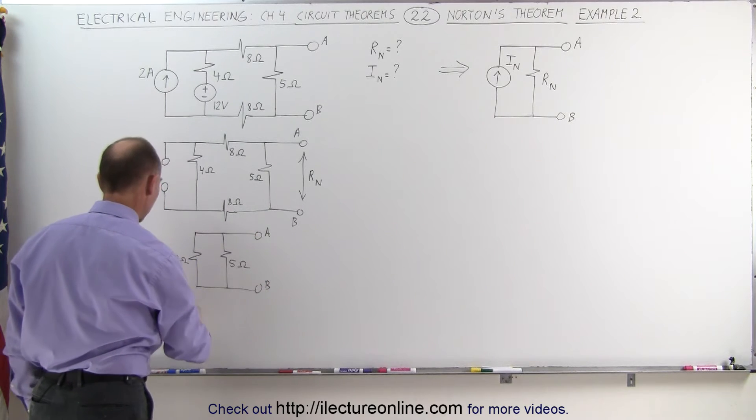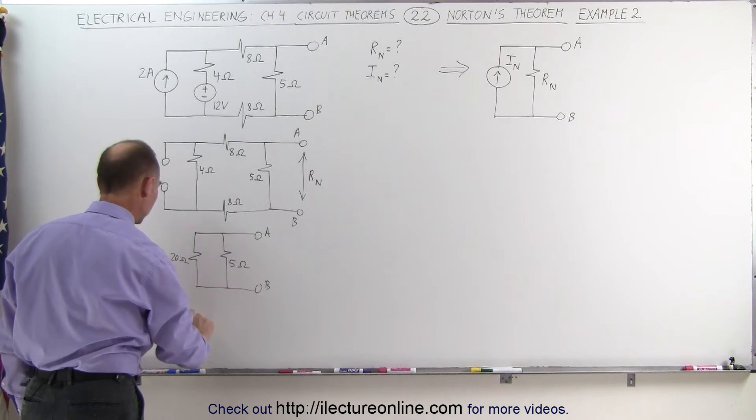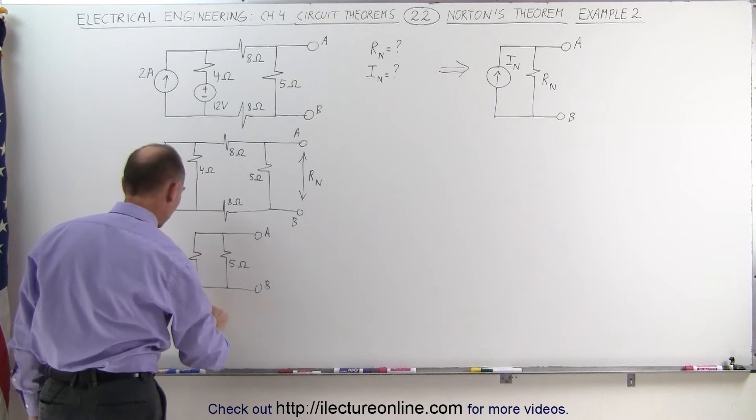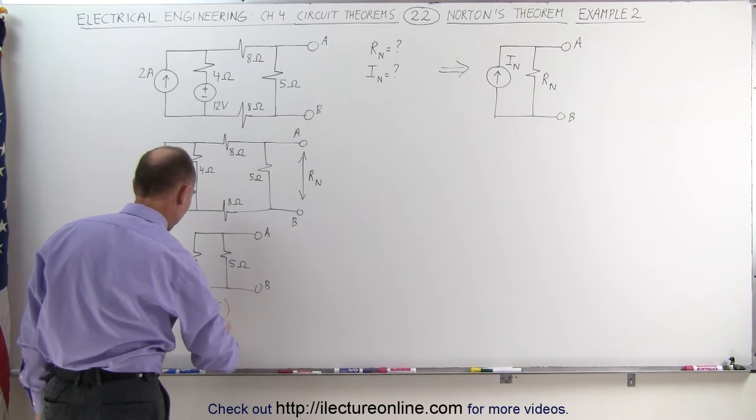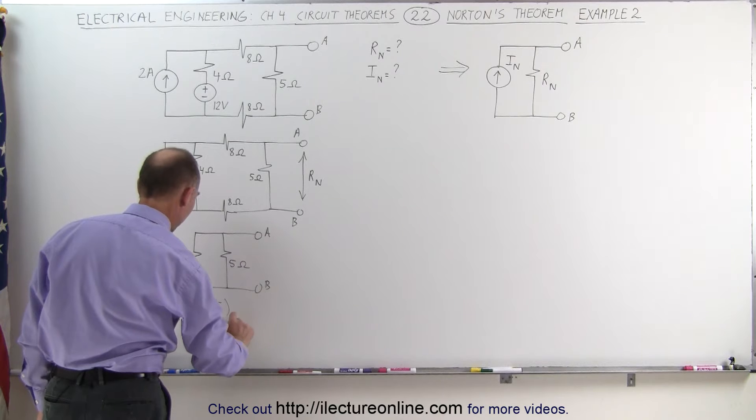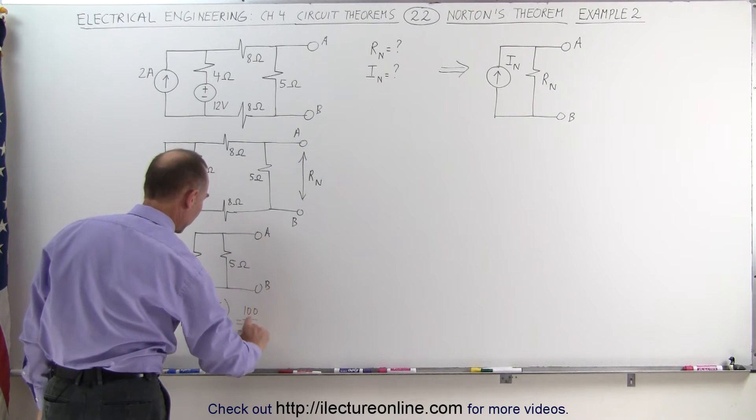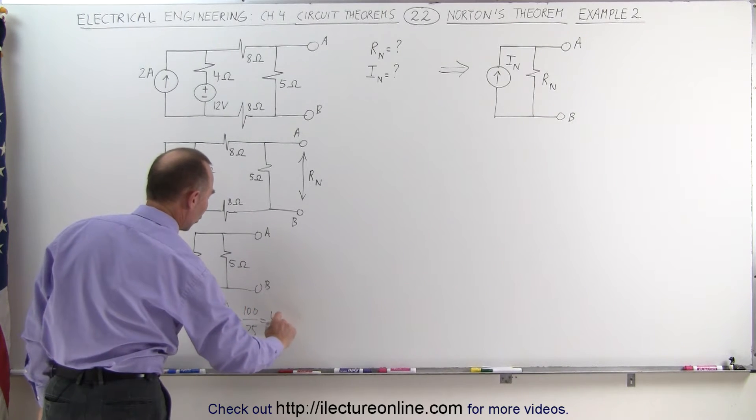Which means that R sub N is simply equal to the product over the sum which is 20 times 5 divided by 20 plus 5 which is 100 divided by 25 which is 4 ohms.